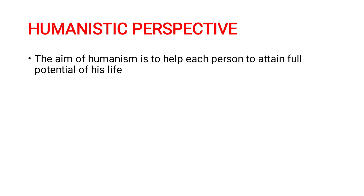Humanistic perspective: The aim of humanism is to help each person attain his fullest potential in life. We all know Maslow's hierarchy of needs, where the highest level is self-actualization — helping the person achieve the maximum in his life. Based on self-esteem and self-confidence, behavior also gets influenced. The humanistic perspective focuses on helping each person attain his fullest potential through self-actualization, self-esteem, and improved confidence, which determines behavior.